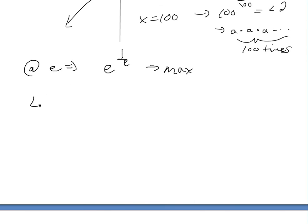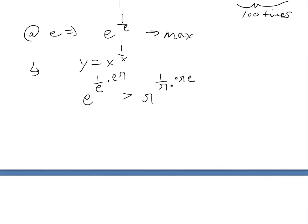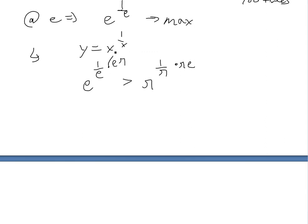From here we can deduce that, for y equals x to the one over x, we know that x equals e is the maximum. So e to the one over e is greater than pi to the one over pi, since pi is not equal to e. Then we multiply both exponents by e times pi — doing the same to both sides. The e's cancel and the pi's cancel, so we're left with e to the pi is greater than pi to the e.